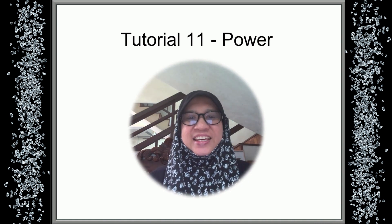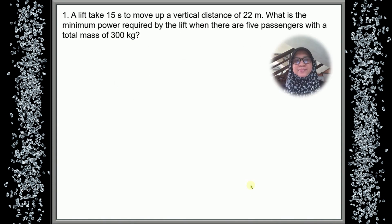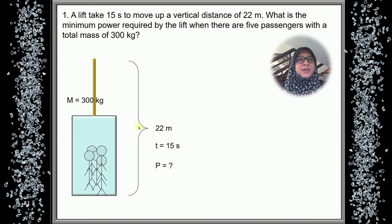Hi everyone, today we are going to discuss Tutorial 11. The topic is power. The first question: a lift takes 15 seconds to move up a vertical distance of 22 meters. What is the minimum power required by the lift when there are 5 passengers with a total mass of 3,000 kg? So the lift has a mass of 3,000 kg together with the people inside, the vertical distance is 22 meters, and the time taken is 15 seconds.